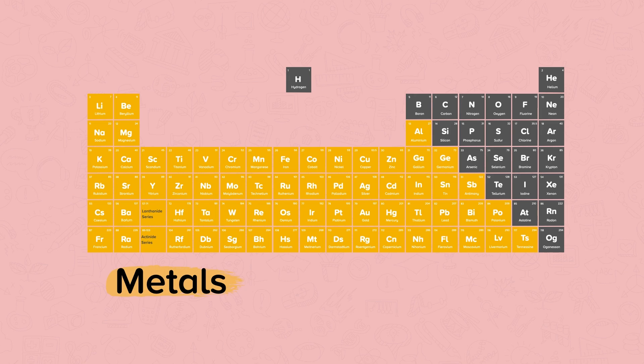Non-metals are found towards the right and top of the periodic table, highlighted here in grey.